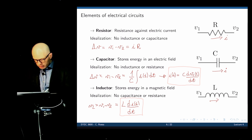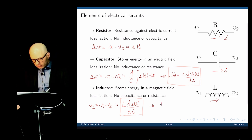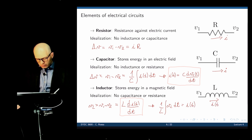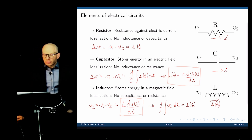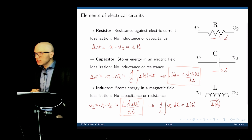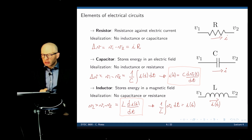If we rearrange the inductor equation, multiplying both sides by 1/L gives 1/L times VL equals dI/dt. Integrating both sides: 1/L times the integral of VL dt equals I(t). To summarize: in a DC circuit, the capacitor becomes an open circuit because no current flows through it, and the inductor becomes a short circuit because there is no voltage drop across it.